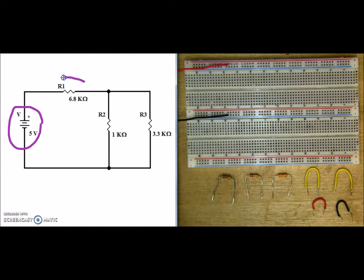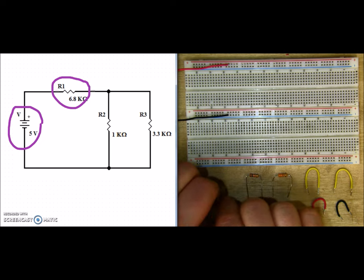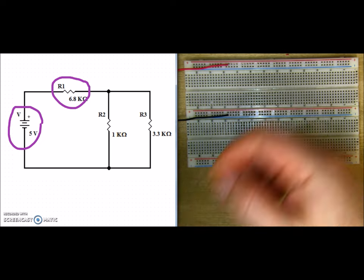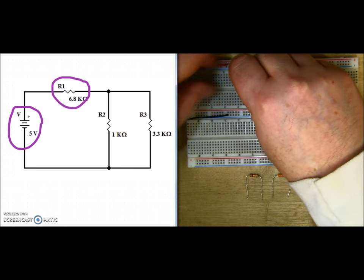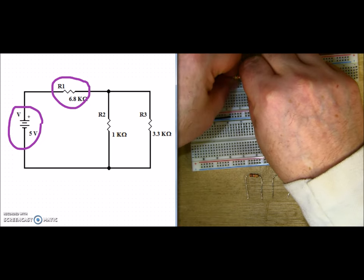Next up, let's go ahead and put in R1. R1 is in series, so I'm going to build a circuit like I see it. I'm going to put R1 horizontally on my breadboard.